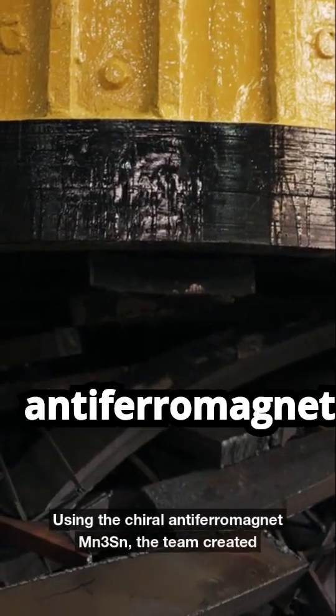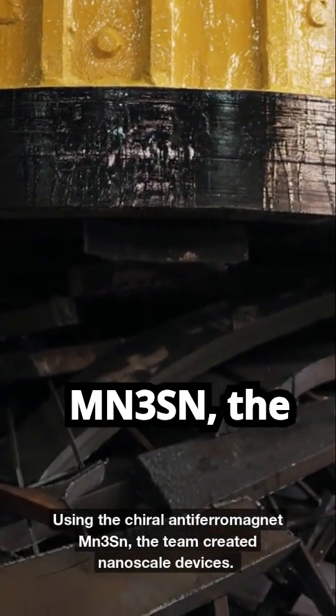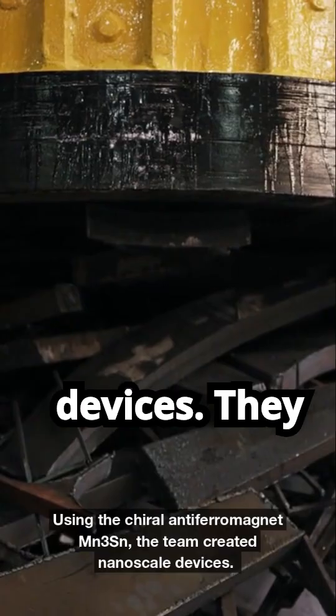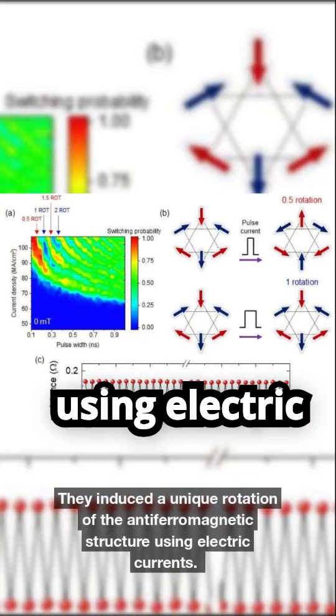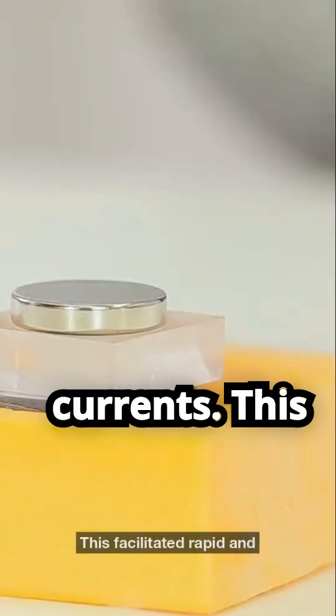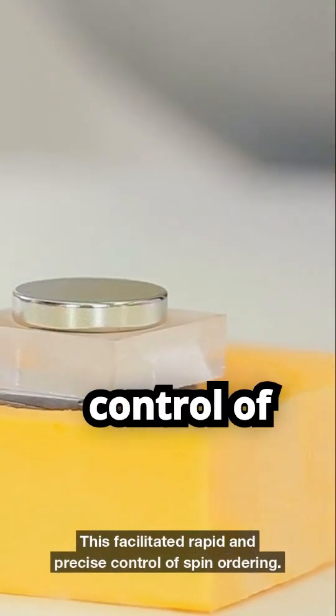Using the chiral antiferromagnet MN3SN, the team created nanoscale devices. They induced a unique rotation of the antiferromagnetic structure using electric currents. This facilitated rapid and precise control of spin ordering.